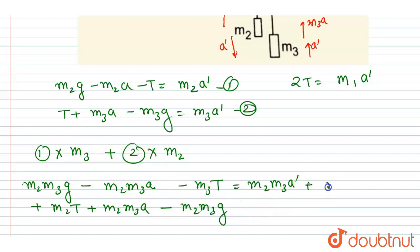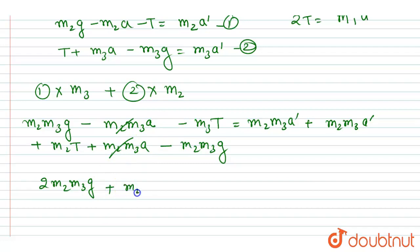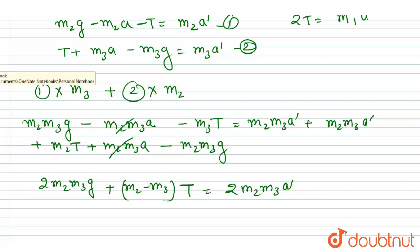The 'a' terms cancel out. We get: 2*m2*m3*g plus (m2 minus m3)*t equals (m2 + m3)*a' — simplifying the combined equation.